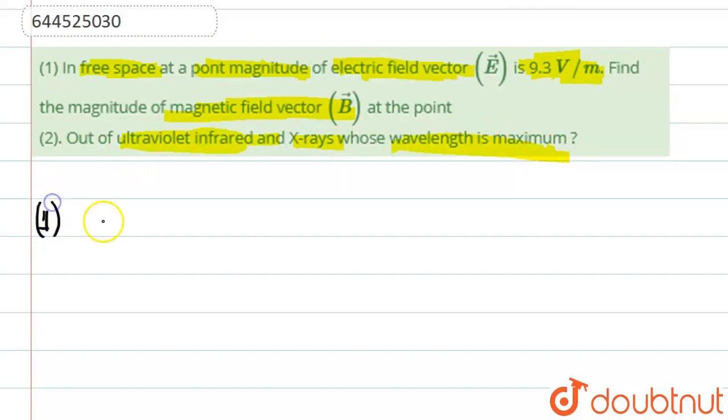So first part of the question - we'll use the equation C, which is the speed of light, is equal to E upon B, which is electric field upon magnetic field.